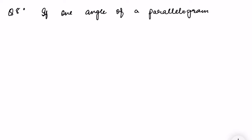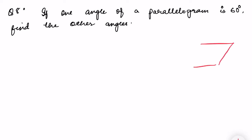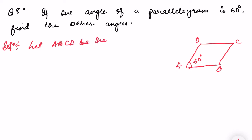Now we are doing exercise 6.3, question number 8. The question says: if one angle of a parallelogram is 60°. So there is a parallelogram — let's say this is A, B, C, D — and this angle is 60°. We need to find the other angles. Let A, B, C, D be the given parallelogram.